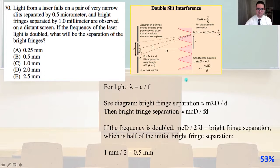Again, hyperphysics has such a wealth of knowledge. So the bright fringe separation about equals mλD/d. So then the bright fringe separation about equals mcD divided by the frequency times d. Well, if the frequency is doubled, mcD/(2f·d) is going to equal our bright fringe separation, which is half of the initial bright fringe separation. So our initial bright fringe separation was 1 millimeter. Divide that by 2. That equals 0.5 millimeters. And that is answer B.